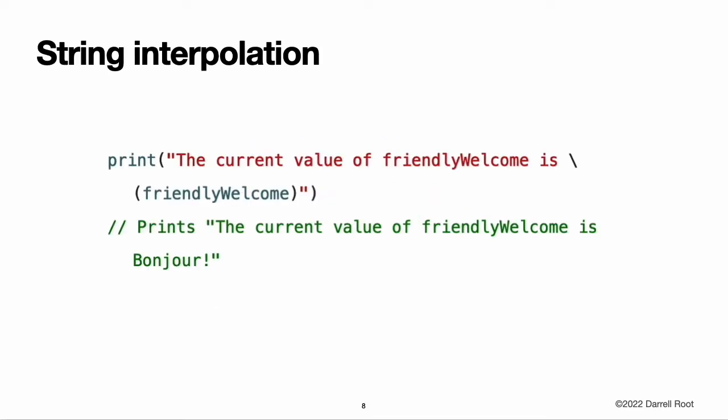Swift uses string interpolation to include the name of a constant or variable as a placeholder in a longer string and to prompt Swift to replace it with the current value of that constant or variable. Wrap the name in parentheses and escape it with a backslash before the opening parenthesis. All options you can use with string interpolation are described in string interpolation.